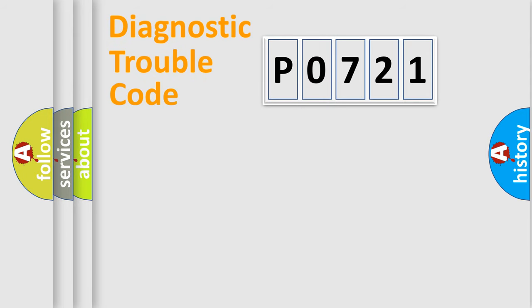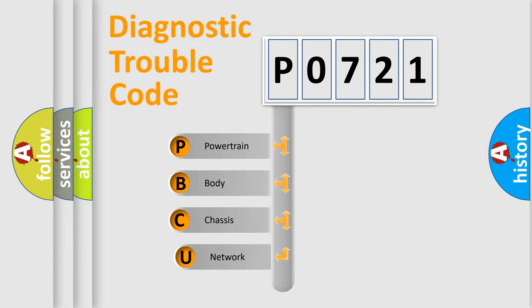Today we will find answers to these questions together. Let's do this. First, let's look at the history of diagnostic fault code composition according to the OBD2 protocol, which is unified for all automakers since 2000.